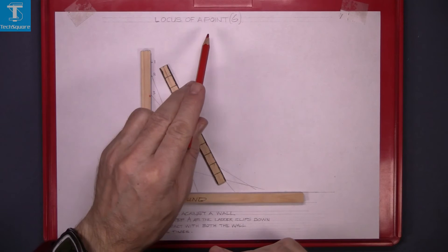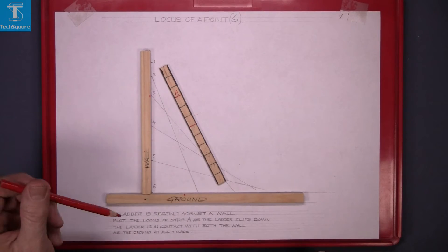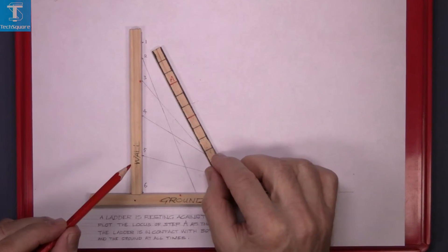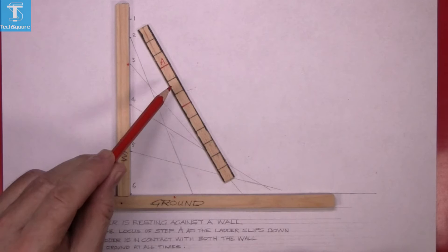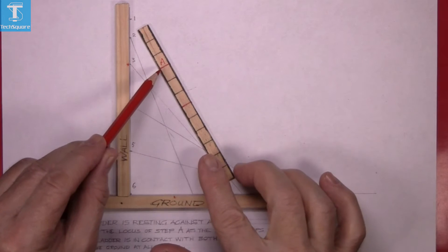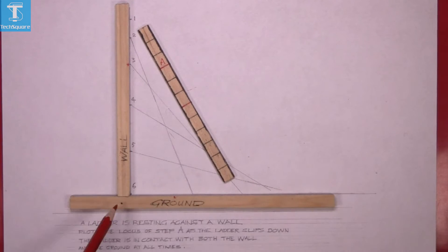Now, this exercise is the locus of a point six. You have three pieces of timber, one representing a ladder with step A marked in red, and the other wall and the other ground.